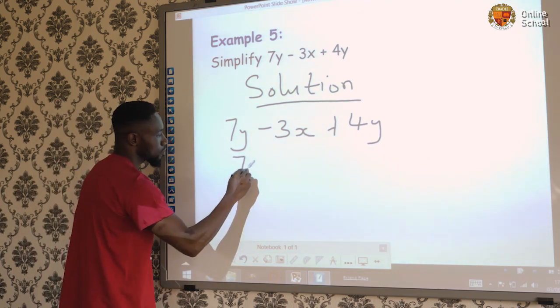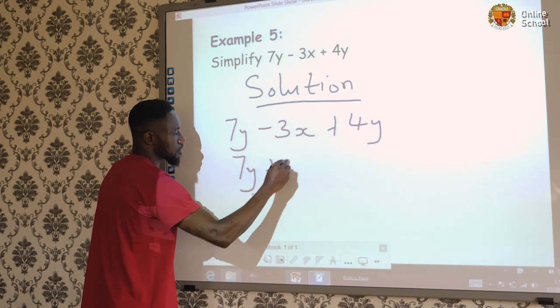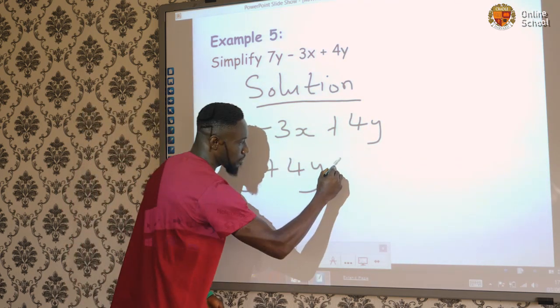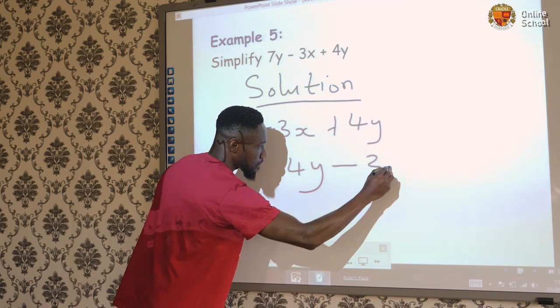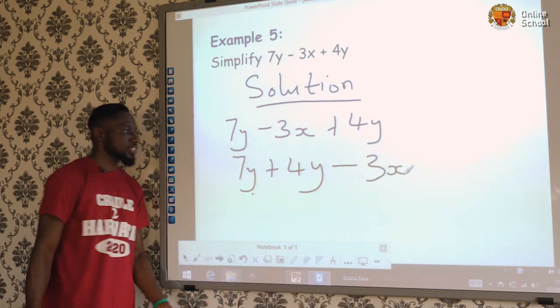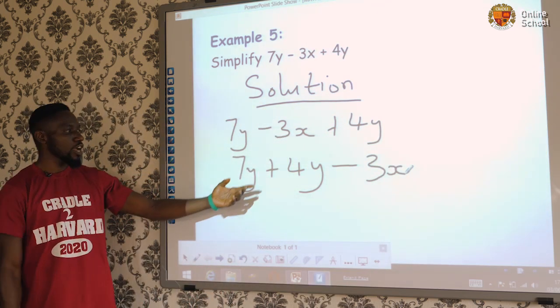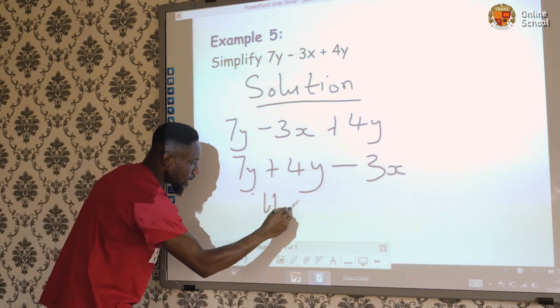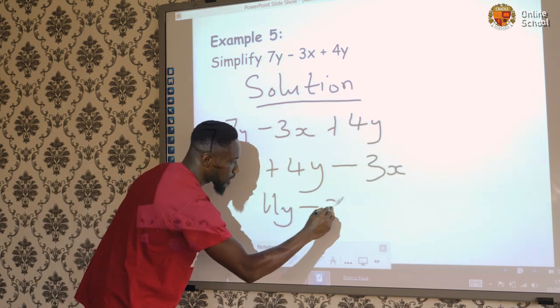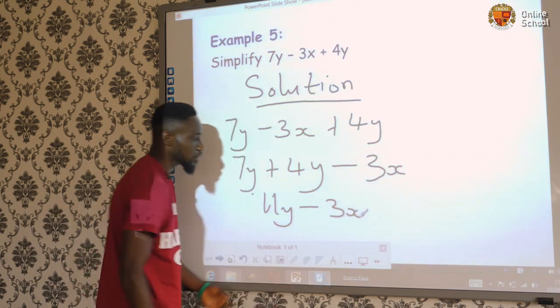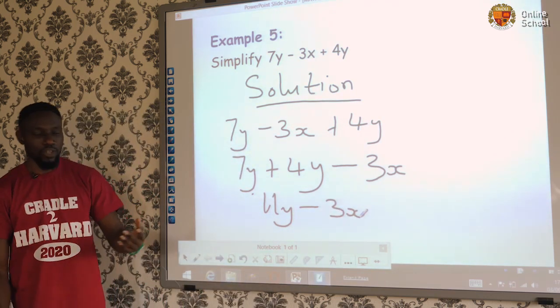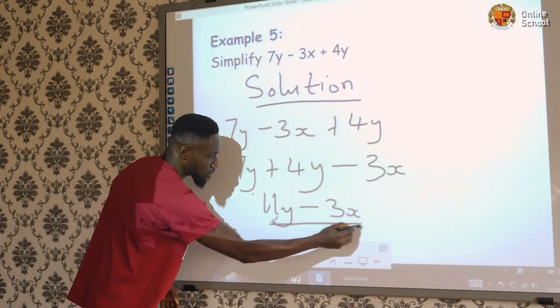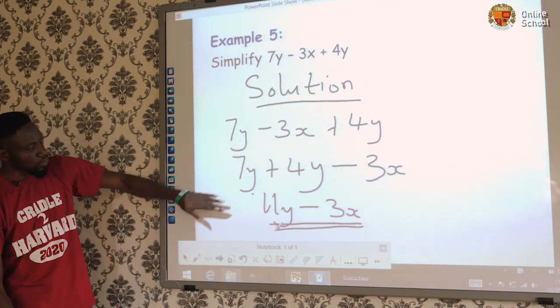That will give us 7y + 4y. Don't forget, they are like terms. Then you bring the one that is a different term behind minus 3x. And then we can solve for that. 7y + 4y will give us 11y. 11y - 3x. Can we solve for that? No. Why? Because they are unlike terms. And that is our answer for this particular equation.